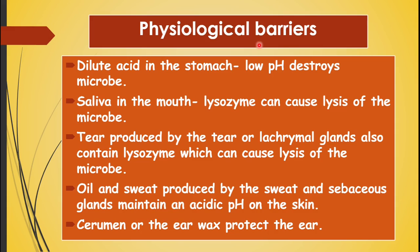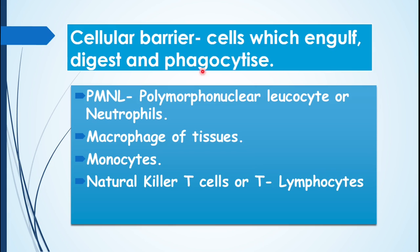We have now learned about the physical and physiological barriers. The third barrier is the cellular barrier. Cellular barriers are certain kinds of cells in our body that have the unique capacity to engulf microbes, digest them, and phagocytose them. These special cells are capable of carrying out phagocytosis of pathogens.